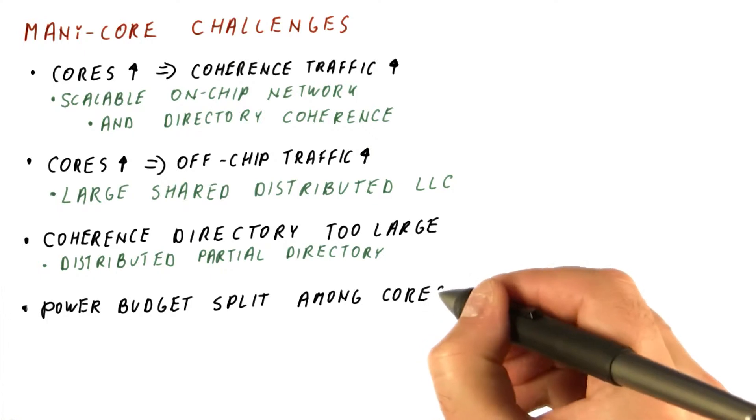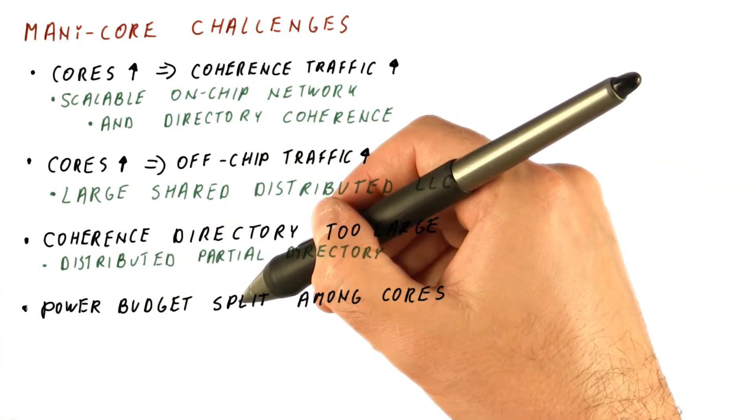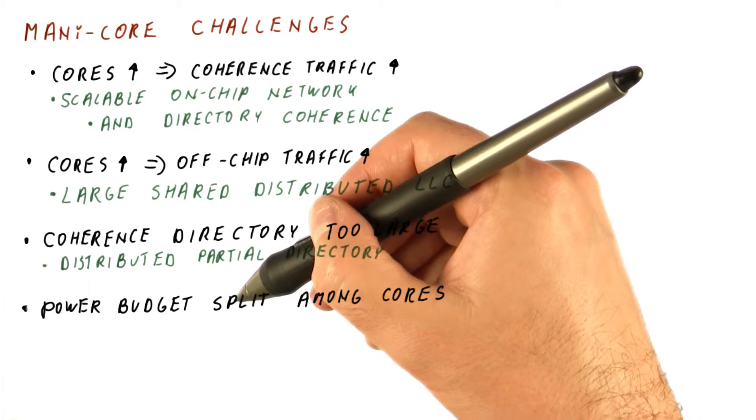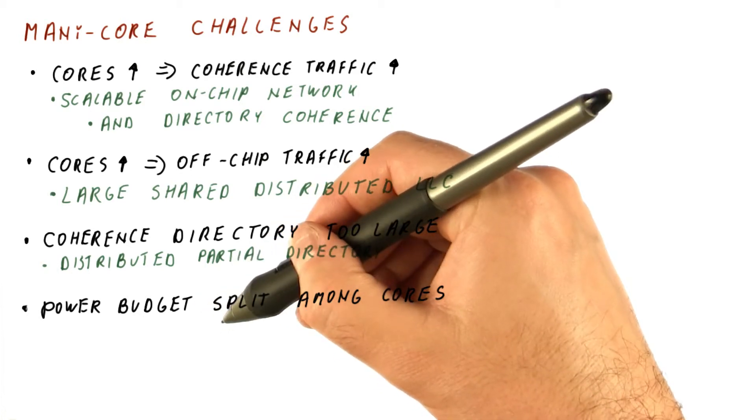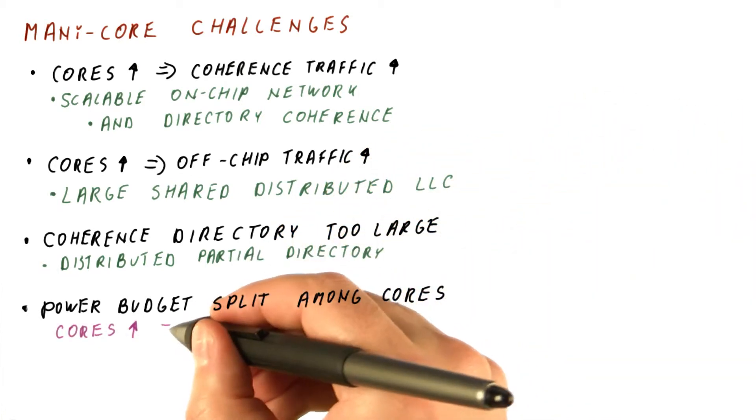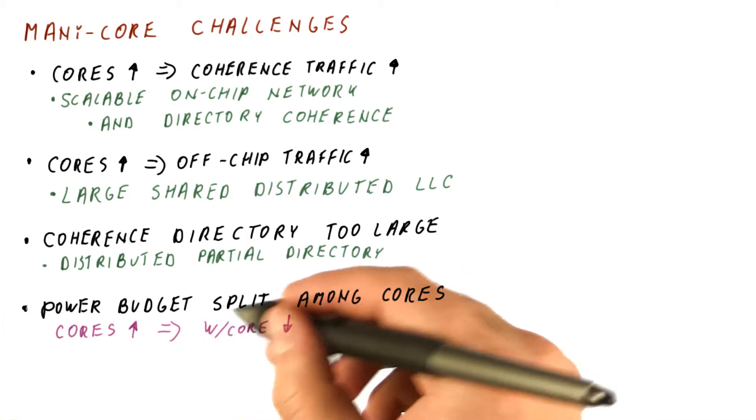The next many-core challenge we will consider is that the power budget available for the chip, for example, 100 watts that we can reasonably cool from a chip of the area that we can manufacture, is split among all the cores. So as the number of cores goes up, the power we can spend in each core goes down.